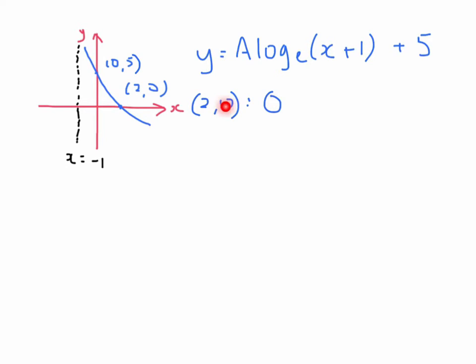So when we substitute in x is 2 and y equals 0, that gives us 0. That's y there. So 0 equals a log to the base e of x is 2, so we'll make it 2 over here. 2 plus 1 plus 5.